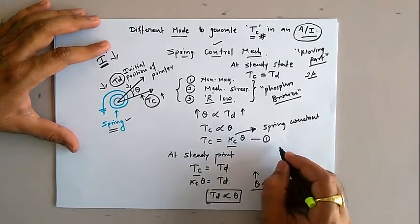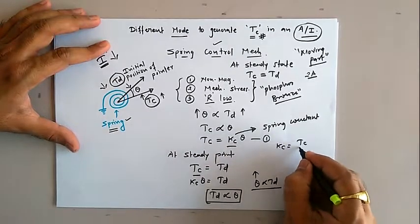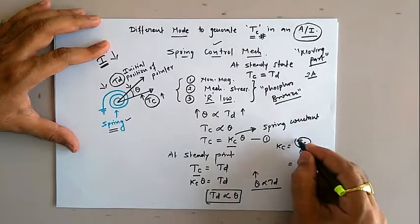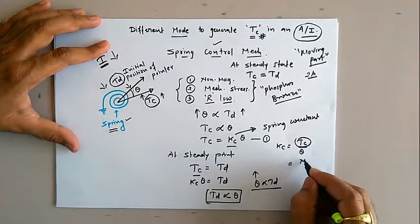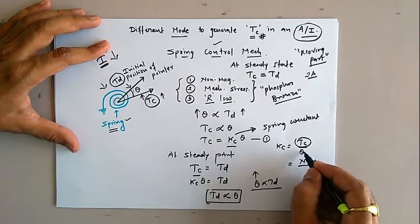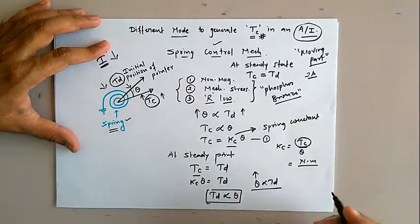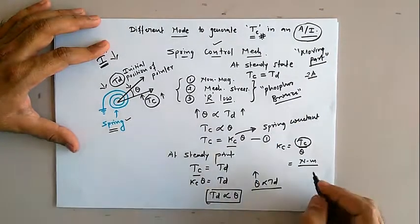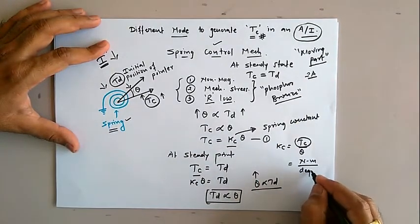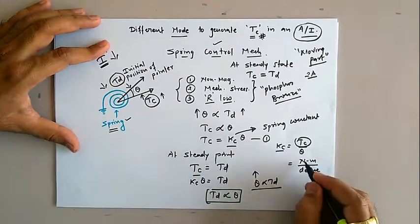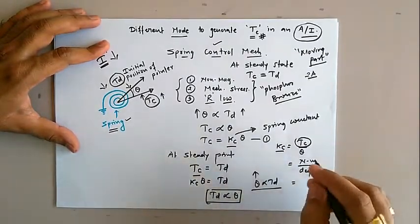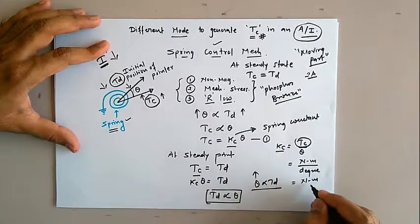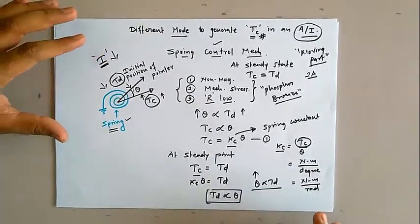Now let us analyze the unit for the spring constant. From equation 1, Kc = Tc / θ. Kc is a torque divided by angle, and the unit of torque is Newton meter. If the angle theta is represented in degrees, then the unit of spring constant is Newton meter per degree. If the angle is in radians, then the unit of spring constant is Newton meter per radian.